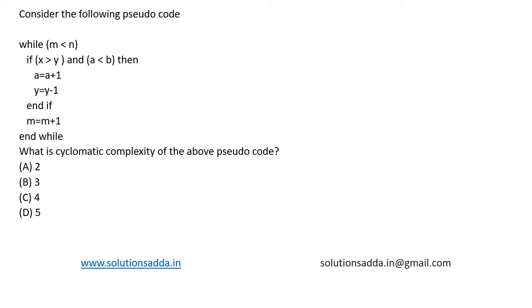This is a question from software engineering. Consider the following pseudocode. While m less than n, if x greater than y and a less than b, then a equal to a plus 1 and y equal to y minus 1. We are ending the if condition. Then m equal to m plus 1. Then we are ending the while loop.